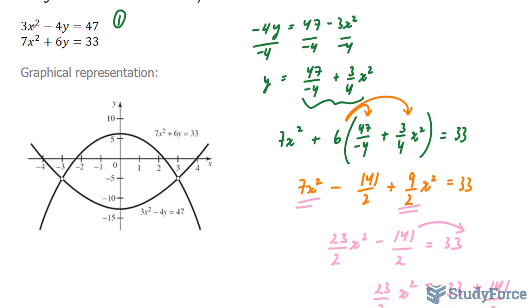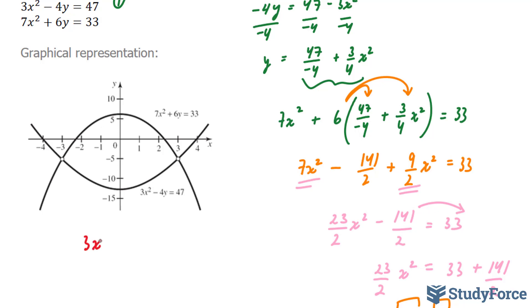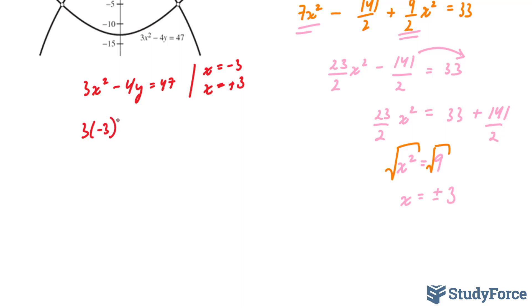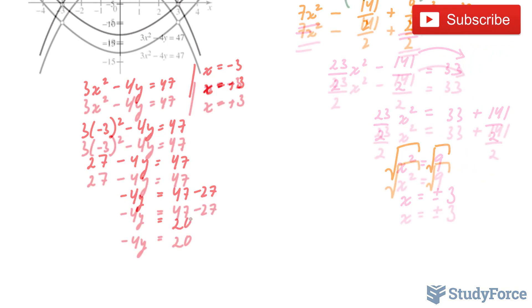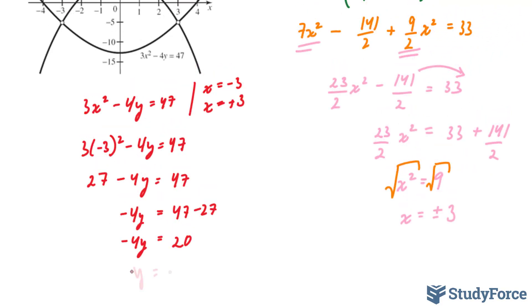Well, I can take these numbers now and substitute them into either of these two equations. I'm going to use equation 1 for no particular reason. I have 3x squared minus 4y is equal to 47. I'll substitute x is equal to negative 3 and x is equal to positive 3. 3 times negative 3 squared minus 4y is equal to 47. This simplifies to 27 minus 4y is equal to 47. Bringing this 27 over, this simplifies to 20. Dividing both sides by negative 4, we end up with negative 5.